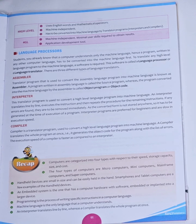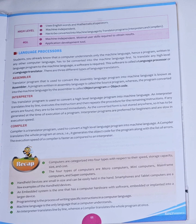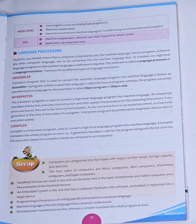In our last two classes we have studied about the categories of computer and computer languages. So in today's session we are going to discuss about language processors. Computer understands only the machine language. So if the program is written in any other language, it has to be converted into machine language first in order for the computer to understand it. In order to translate any high-level language program into machine language, we need a software. This software is called a language processor or language translator.